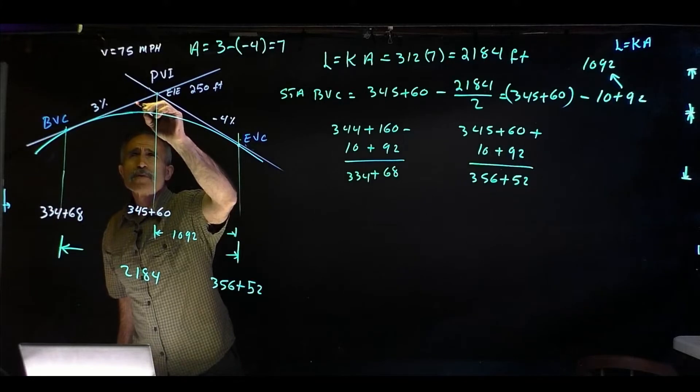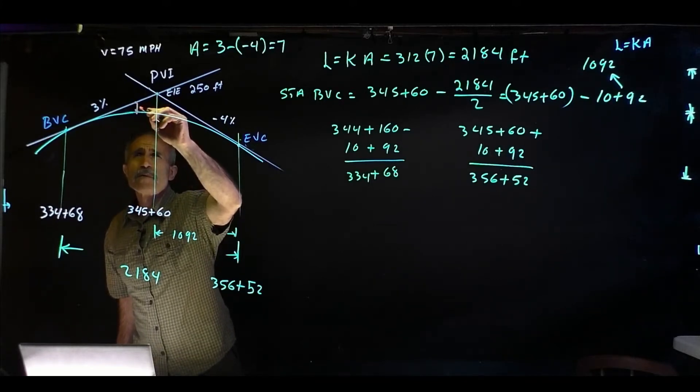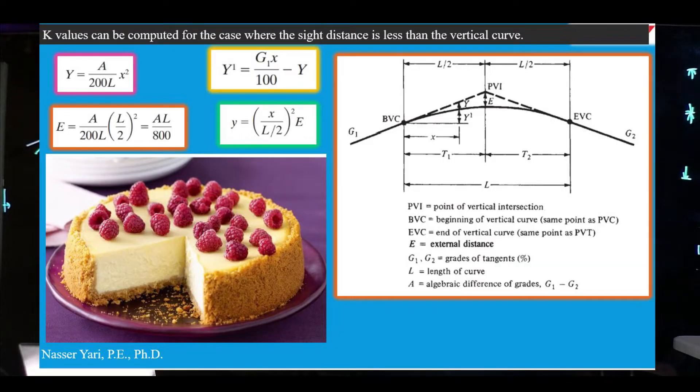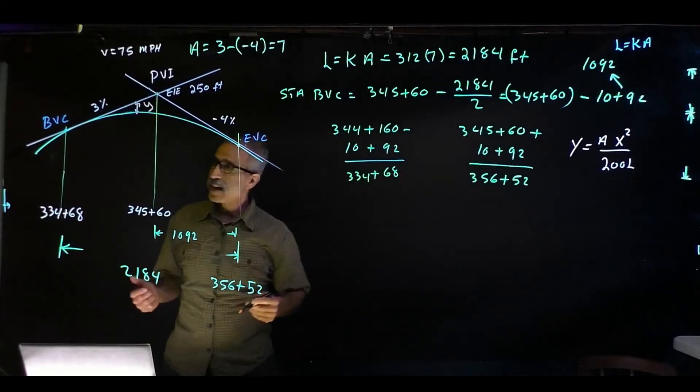And then the equation for Y is, we just write it here, equation for Y equals AX squared divided by 200L. So we already know what our L is.